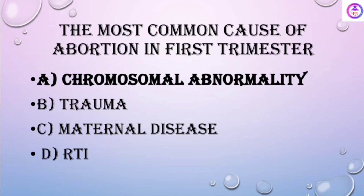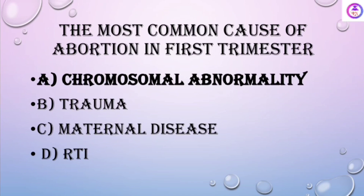The most common cause of abortion in the first trimester is chromosomal abnormality. The baby with chromosomal anomaly most commonly aborts on its own because of the anomaly, and this happens the maximum number of times.